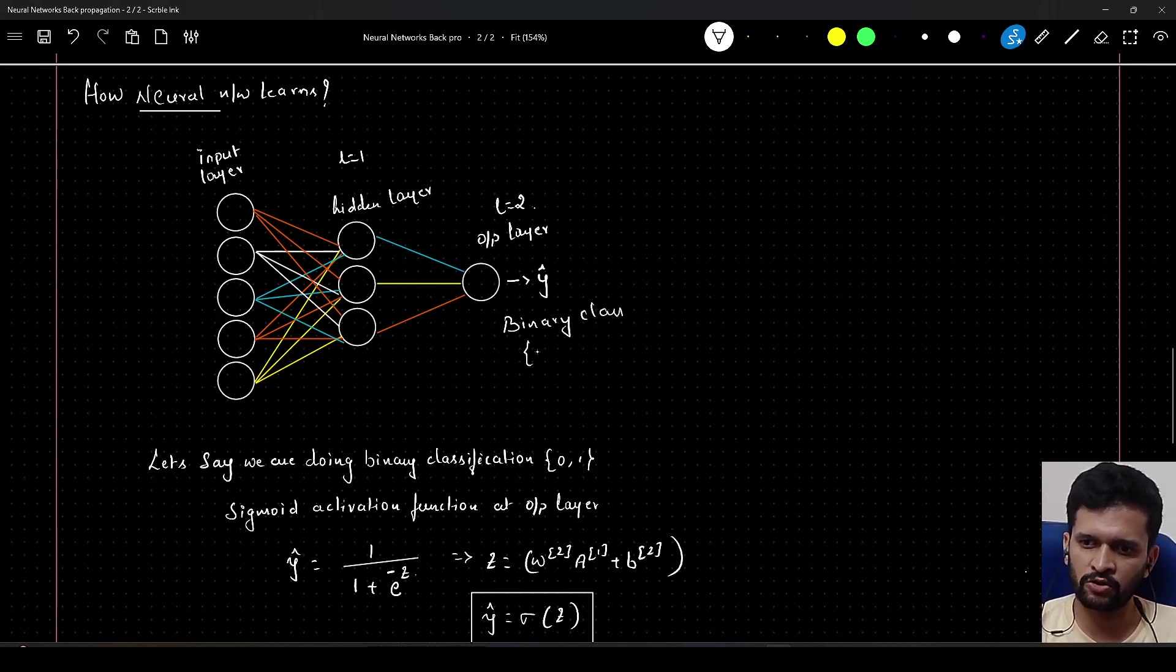This y hat is called prediction or the predicted value. The transition from input to hidden layer or layer 1 will be governed by weights w1 and bias b1. Likewise, the transition from hidden layer to the output layer is governed by weights w2 and bias b2.